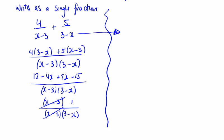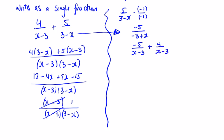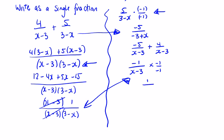There's a quicker way when denominators look similar. If I take 5 over 3 minus x and multiply top and bottom by minus 1 — I'm multiplying the whole thing by 1, not changing its value — I get minus 5 over minus 3 plus x, which is minus 5 over x minus 3. So I have 4 over x minus 3 plus minus 5 over x minus 3, and I can just add the numerators to get minus 1 over x minus 3. This is the same answer — you can multiply by minus 1 over minus 1 to get 1 over 3 minus x. This is a useful shortcut when denominators look similar.